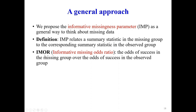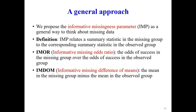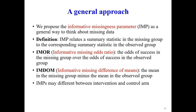For dichotomous outcomes, we have the informative missing odds ratio (IMOR), which relates the odds of success in the missing participants to the odds of success in the observed participants. For continuous outcomes, we have the informative missing difference of means (IMDOM), because we relate the mean outcomes between observed and missing participants.